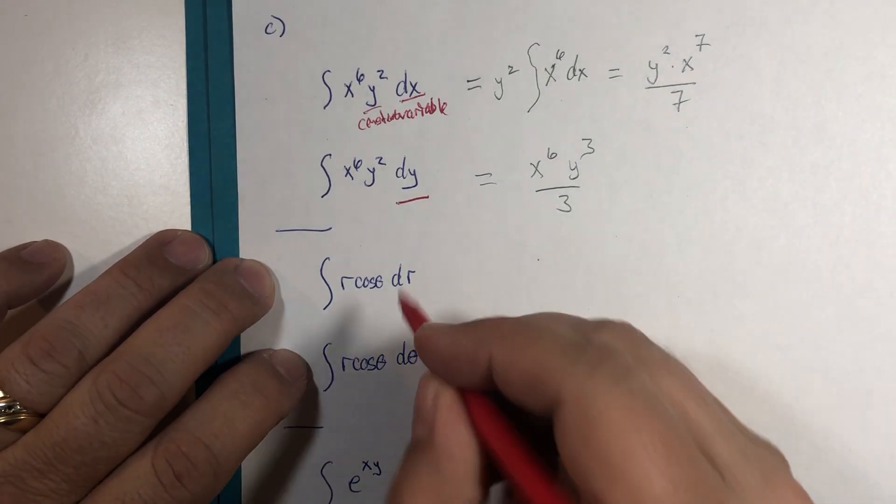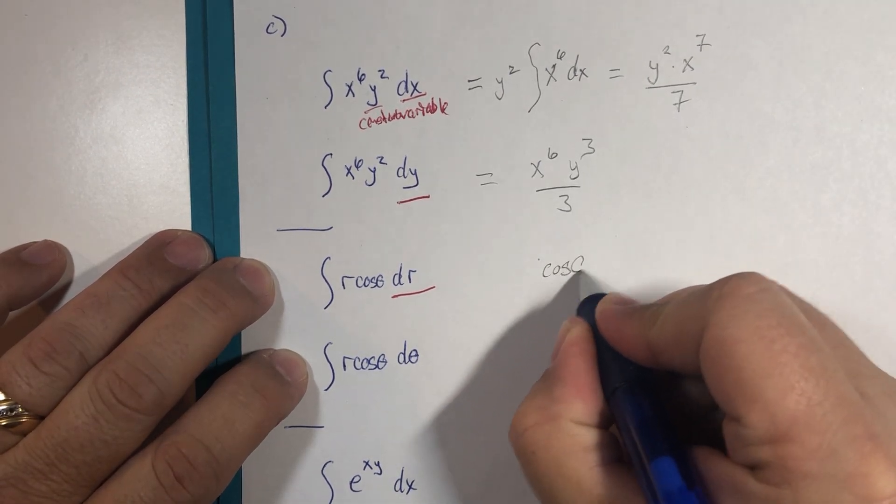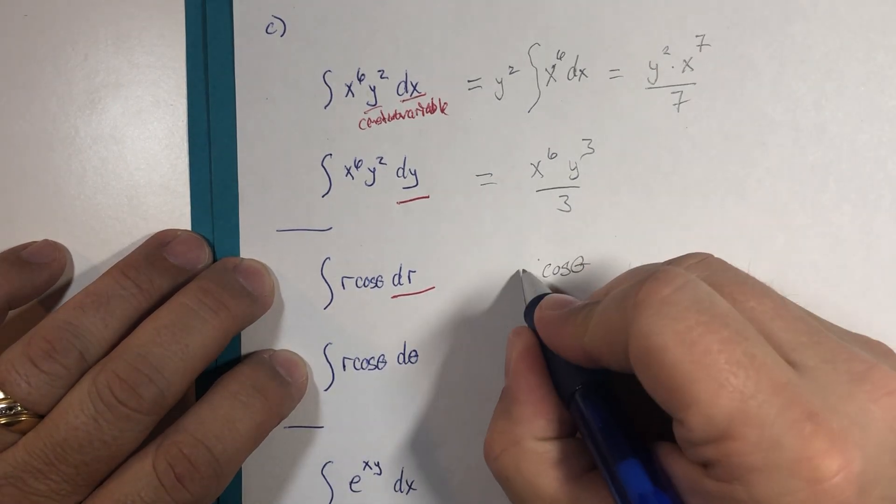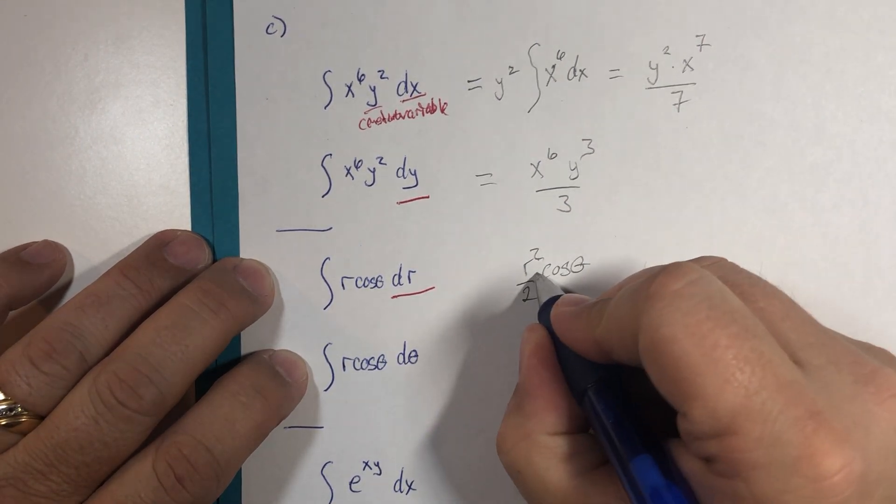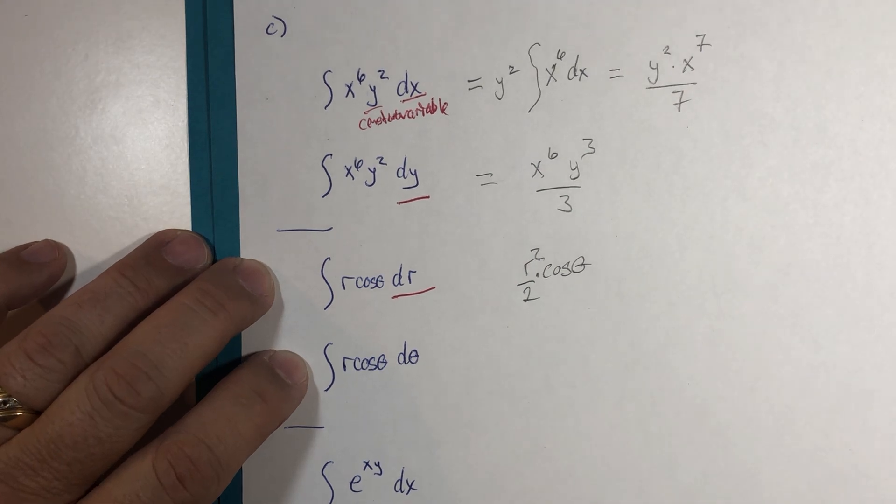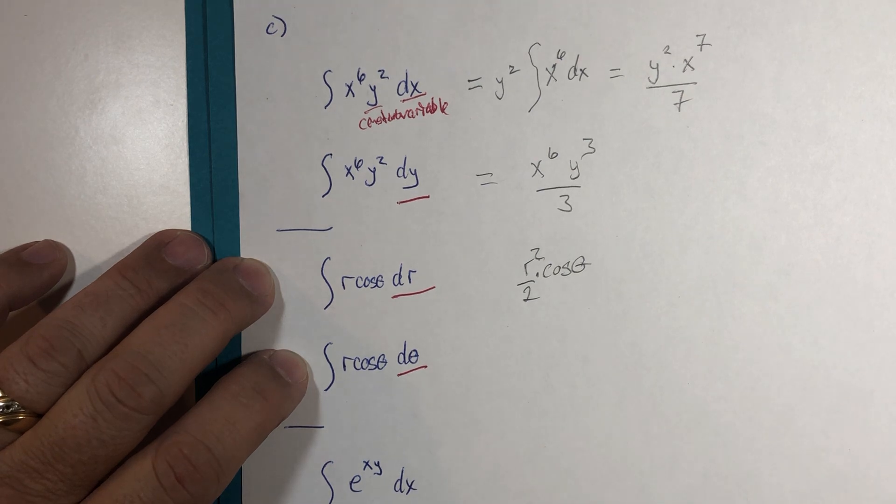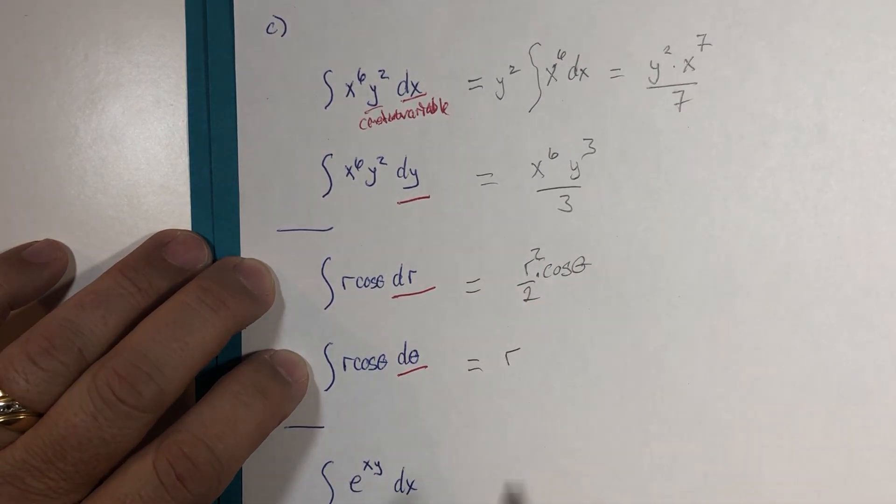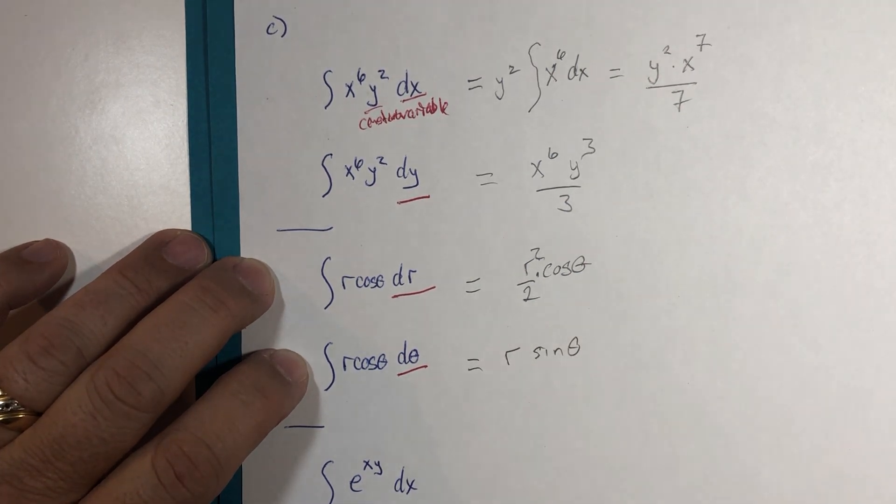If r is the variable, then that means cosine of theta is a constant, and the integral of r would be r squared over two. You're welcome to put this afterwards as long as it's very clear that they're being multiplied. If theta is the variable, that makes r the constant. Integral of cosine of theta is sine of theta plus c of course.